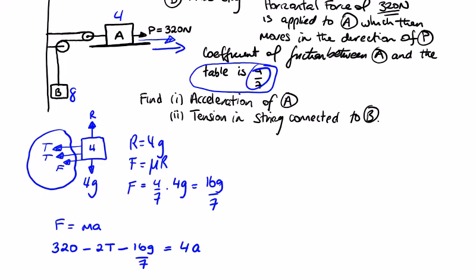So we have two unknowns there, T and a. So we need to go to B, which is 8 kilograms. We have 8g going down, we have T going up. Now there's the difference in the strings here. The acceleration of A we called a, and B is going to be twice that because it's half the amount of strings.